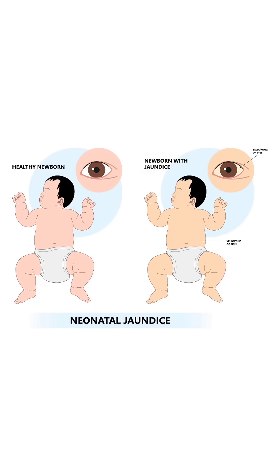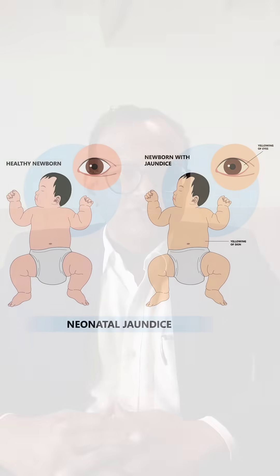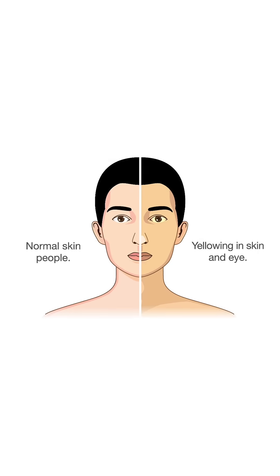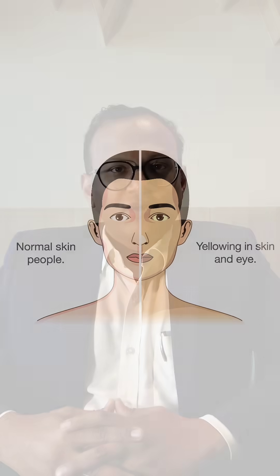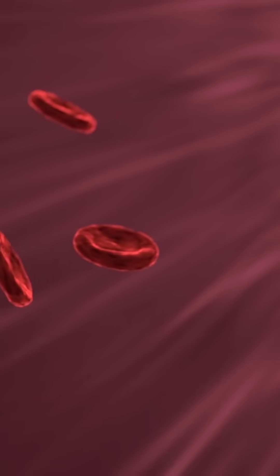Hello guys, today we will be discussing a very important health aspect in children, that is jaundice in children and newborns. Jaundice is actually yellowness in our eyes and the skin, and it occurs because of an increase in a component called bilirubin in our blood.